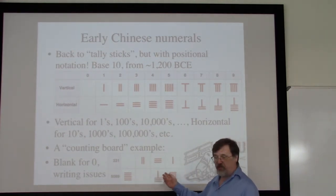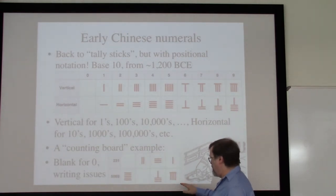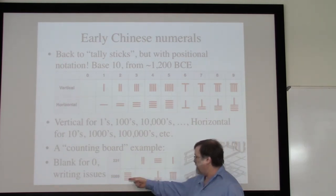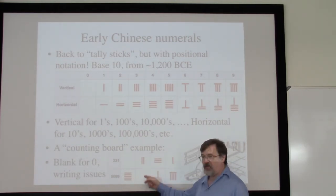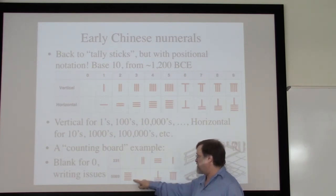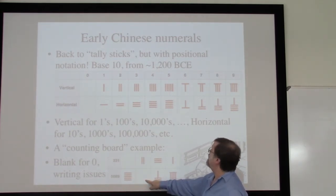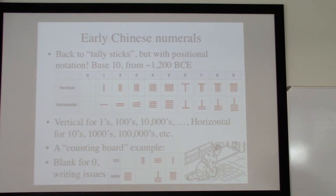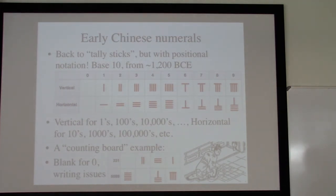That works really well for counting boards, because you don't have any problems seeing a zero — it's just a blank. But if you're trying to write some of these numbers down onto a scroll, you have to be a little bit careful. However, since adjacent digits alternate between horizontal and vertical, you can often tell that a zero must be present. For example, if I go from horizontal to horizontal, there has to be a vertical in between, so I know it's 5089 rather than 589.